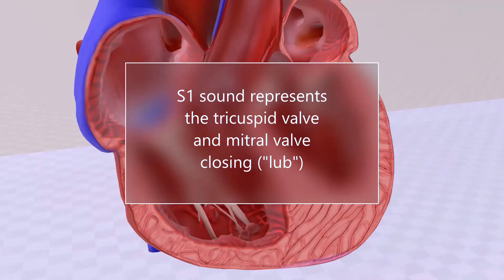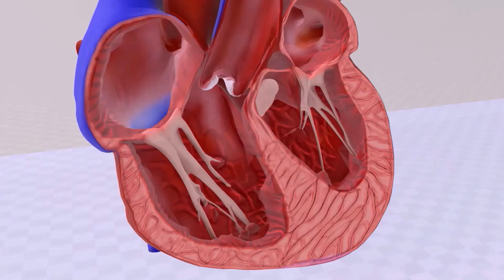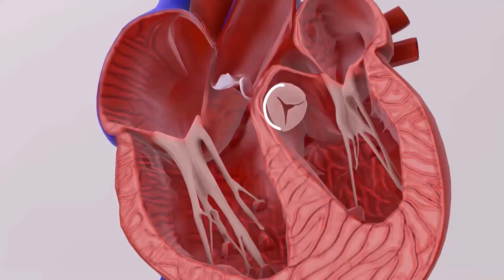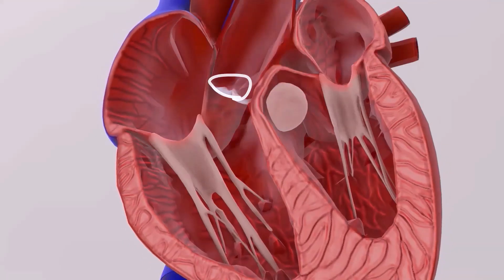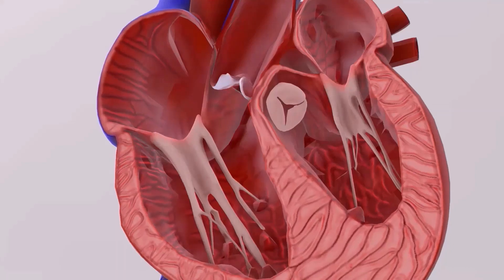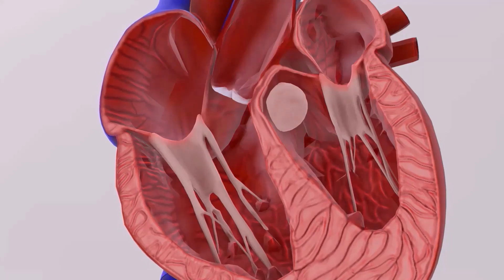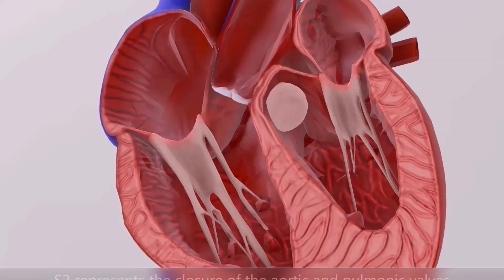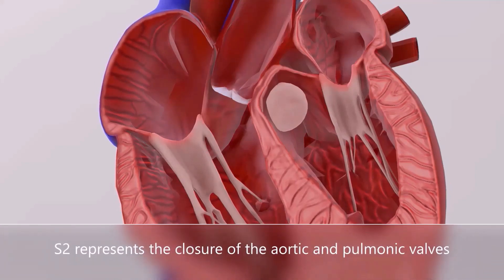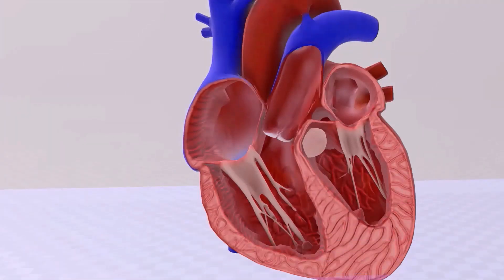Now let's talk about S2. The aortic valve and pulmonic valve open to push blood out to the pulmonary and systemic circulation. When they close, that is the source of S2 — S2 represents the closure of the aortic and pulmonic valves.